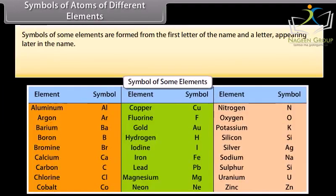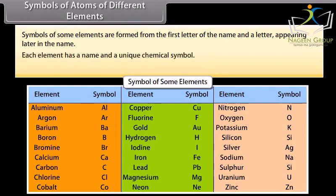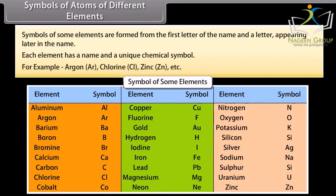Symbols of some elements are formed from the first letter of the name and a letter appearing later in the name. Each element has a name and a unique chemical symbol. For example, Argon is Ar, Chlorine is Cl, Zinc is Zn, etc.